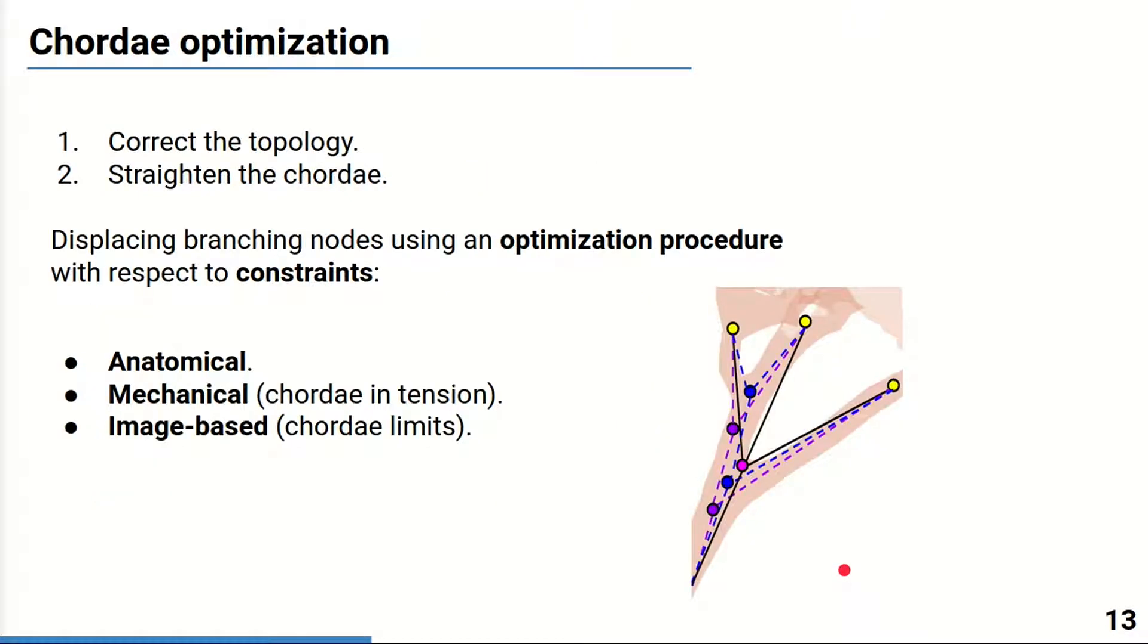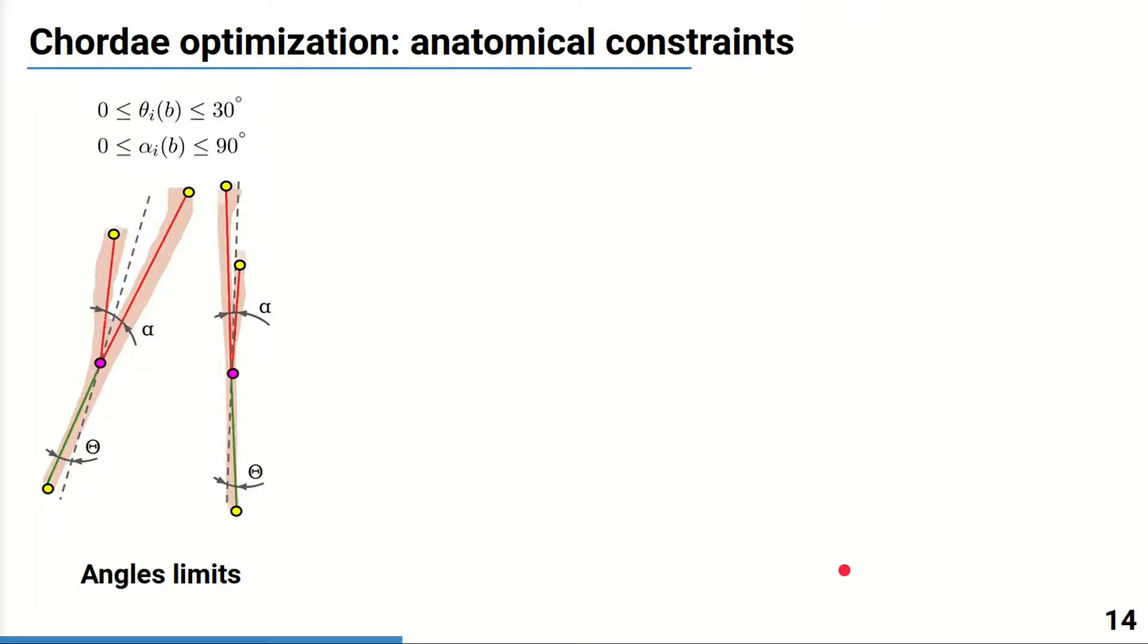To tackle this task, we introduce a method based on optimization procedure for the branching nodes rearrangement considering several different constraints: anatomical, mechanical constraints that chordae are in tension, and image data which takes into account the chordae contours. The anatomical constraints include the limits for the angles between the segments that form a bifurcation. These angles are the straightness angle theta between the base segment and the branching segments bisector, and the branching angle alpha, the angle between the branching segments shown here in red.